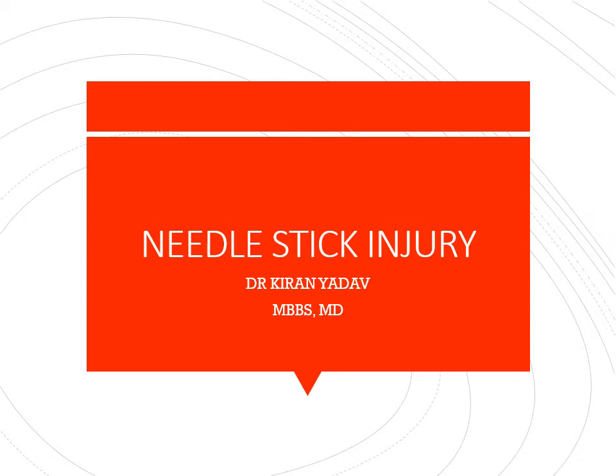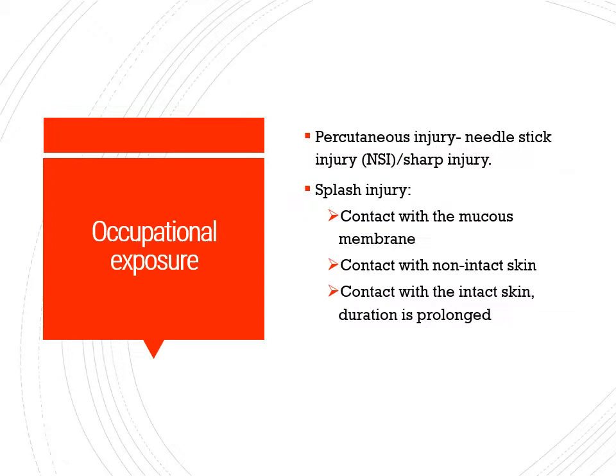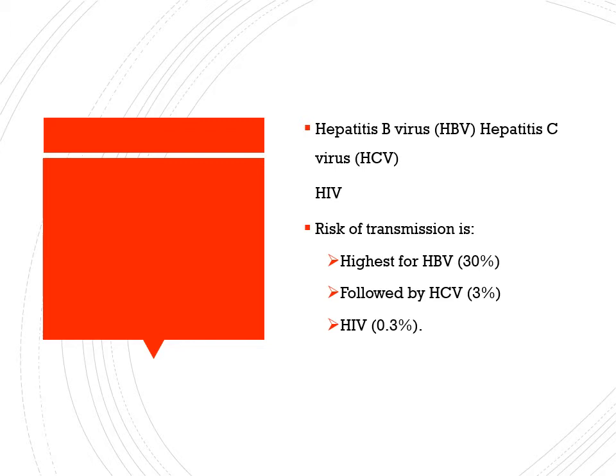Good morning friends. Today we will learn about needlestick injury — what is this occupational hazard to healthcare workers, how we can prevent it, and what management we can do in these cases. This is an occupational exposure and it could be of two types: percutaneous injury, which is a needlestick or sharp injury, or splash injury, where some fluid of the patient comes in contact with the healthcare worker's mucous membrane, non-intact skin, or intact skin for a long duration.